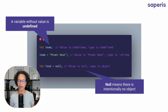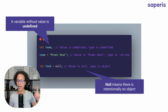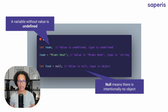Our next data type is undefined. We're declaring the variable 'let team' — so we're creating with the keyword let a variable called team. We have our team, but we haven't assigned a value. In such a situation we have a data type of undefined. And as soon as we assign a value — in this case, 'Miami Heat' — the data type will change to string.